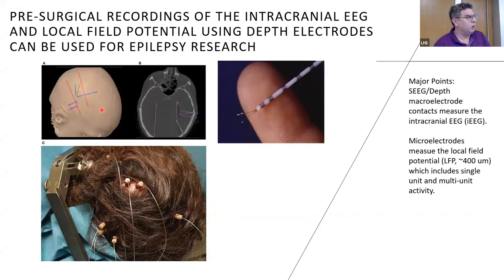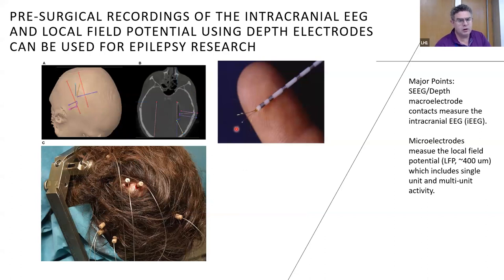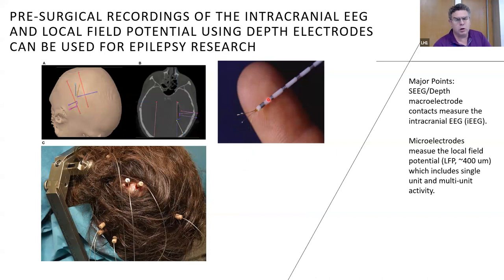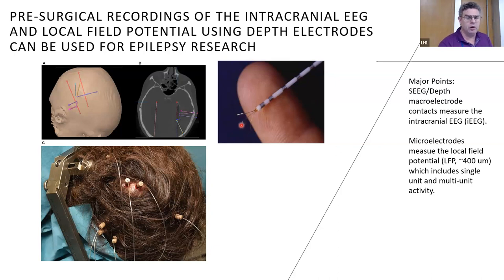Most of the work presented today comes from stereo EEG recordings from patients. The Behnke-Fried electrode records synchronous local field potentials from microelectrodes and intracranial EEG from macroelectrodes. The intracranial EEG records neural activity from up to a centimeter away but cannot record action potentials from single cells. The local field potential from microelectrodes records activity from several hundred micrometers away and can record single and multi-unit action potentials.